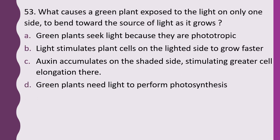Question 53. What causes a green plant exposed to light on only one side to bend towards the source as it grows? Options: A — green plants seek light because they are phototropic; B — light stimulates cells on the lighted side to grow faster; C — auxin accumulates on the shaded side, stimulating greater cell elongation there; D — green plants need light to perform photosynthesis. The correct answer is option C.